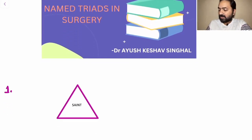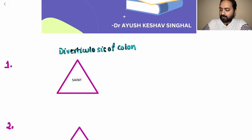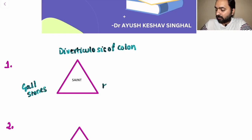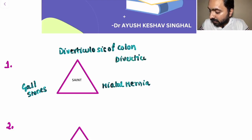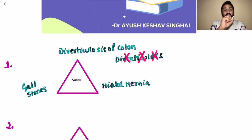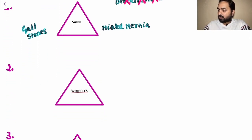Let's start with the first triad, which is Saint's Triad. The components include diverticulosis of the colon, gallstones, and hiatal hernia. The most important confusion often created here is between diverticulitis and diverticulosis — please remember it is diverticulosis of the colon which is the component of Saint's Triad, not diverticulitis.